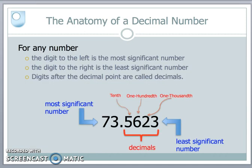When we look at a number, we can see that it's broken up into two parts. There's the number to the left of the decimal point and numbers to the right of the decimal point.